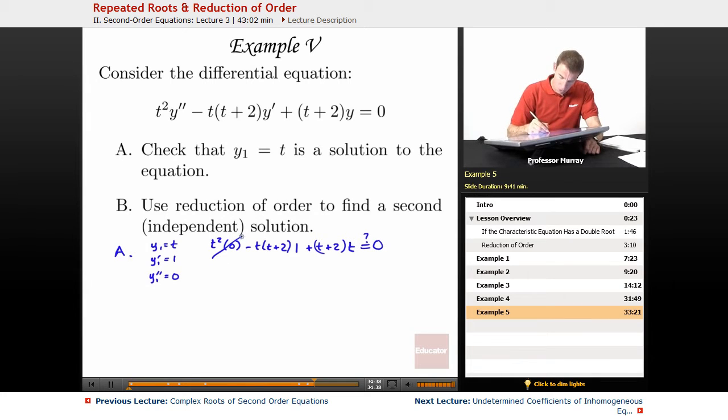And so the 0 term drops out here. So we've got minus t times (t+2) plus (t+2) times t, and we're checking to see if that equals 0. Now, in each term here, we've got t times (t+2),